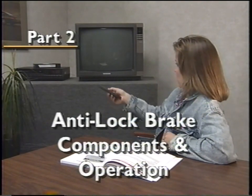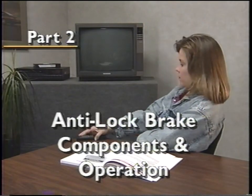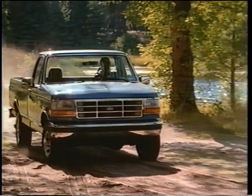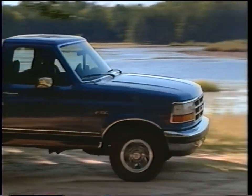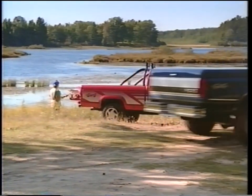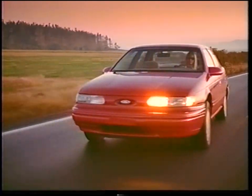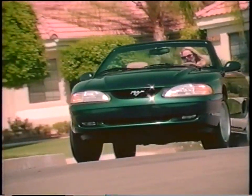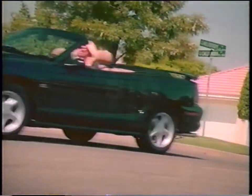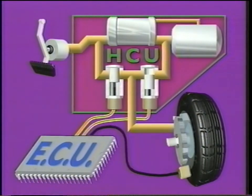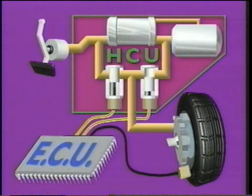Now that you have a basic understanding of how ABS works, let's look at the operation of the individual ABS components. Ford Motor Company uses Anti-Lock Brake Systems that are manufactured by several different companies. The following components are common to many of these systems. Our first component, the ECU, is a microprocessor that has pre-programmed calibrations to control the Anti-Lock Brake System.